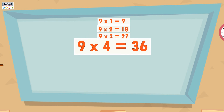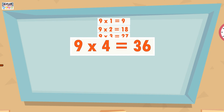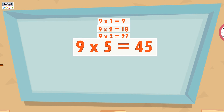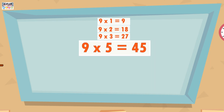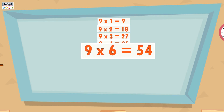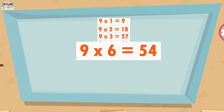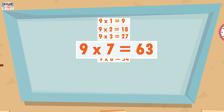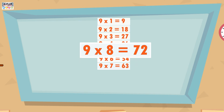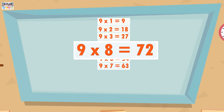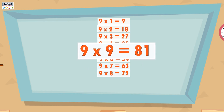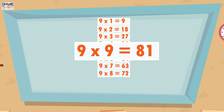9 fours are 36, 9 fives are 45, 9 sixes are 54, 9 sevens are 63, 9 eights are 72, 9 nines are 81.